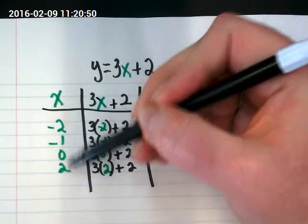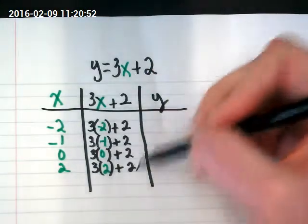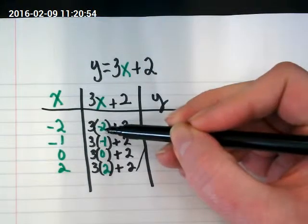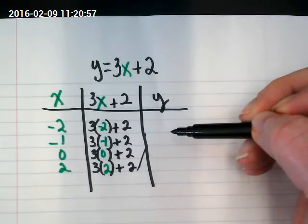And we're going to see what happens. So here are my different values for x. This is like a machine, and I'm putting those different values in. And this is what the answers are popping out.